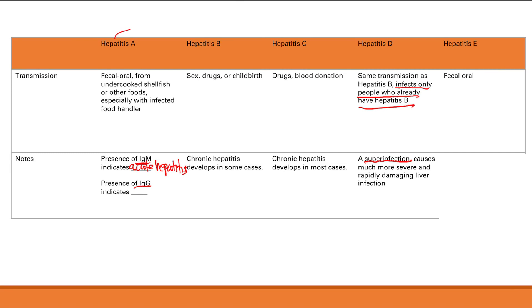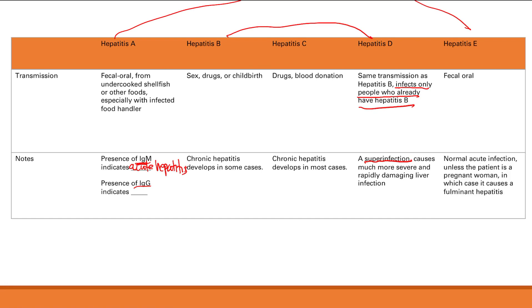Finally, hepatitis E. This is again fecal-oral, similar to hepatitis A. Normally this is an acute infection with infectious symptoms, abdominal symptoms like pain, nausea, vomiting, and obstructive jaundice. However, if the patient is a pregnant woman, that's a totally different case — it can cause a much more severe disease, a fulminant hepatitis or super-severe rapid-onset liver injury.